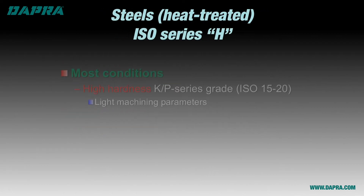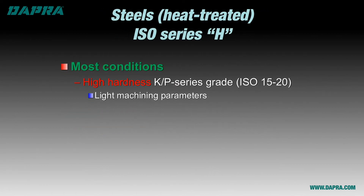The high strength of an ISO series H heat-treated steel requires a harder grade of carbide to stand up to the increased heat and cutting forces present when hard milling. Using a harder carbide grade in the P or K range combined with more conservative machining parameters is the formula for success in machining your hardened steels. Your cutting edge choice is critical here as well, but we'll touch on that in our next video.